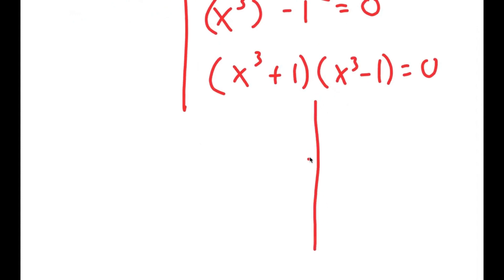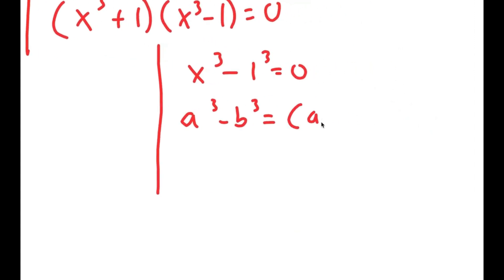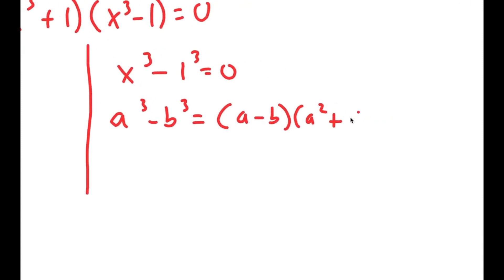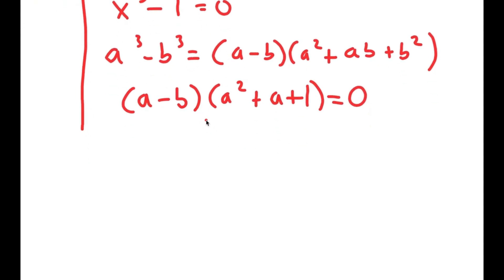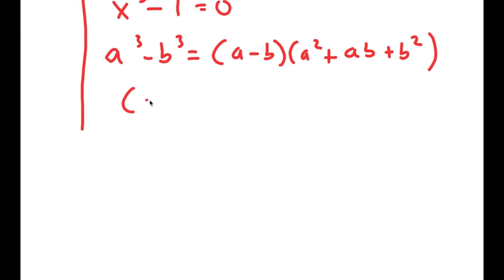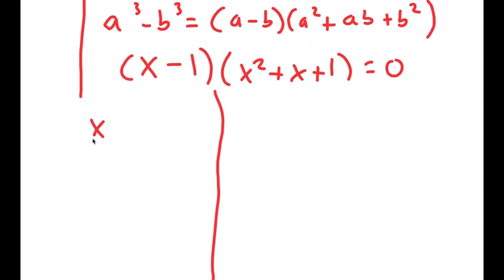Now for x to the power of 3 minus 1 equals 0, I'm going to rewrite this as x to the power of 3 minus 1 to the power of 3 equals 0. So I can use the property a cubed minus b cubed is equal to a minus b times a squared plus ab plus b squared. This turns into x minus 1 times x squared plus x plus 1 is equal to 0, which gives me two equations: x minus 1 equals 0 and x squared plus x plus 1 equals 0.